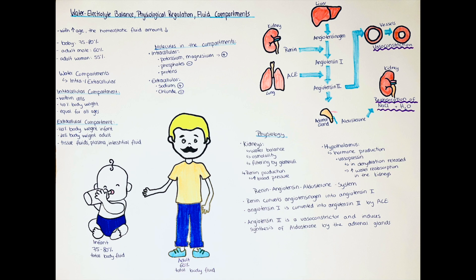The extracellular fluid, on the other hand, is up to 40% of the body weight in an infant; however, in adults, it is only around half of that — so 20% of the body weight. The extracellular compartment is found outside the cells, and it comprises tissue fluids, plasma, and interstitial fluid that surround cells. With increasing age, it proportionally decreases in comparison to the intracellular fluid.